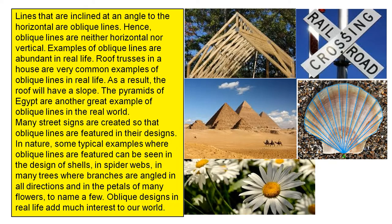In nature, some typical examples where oblique lines are featured can be seen in the designs of shells, in spider webs, in many trees where branches are angled in all directions, and in the petals of many flowers, to name a few. Oblique designs in real life add much interest to our world.